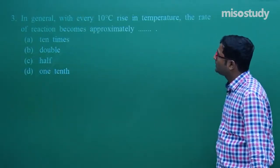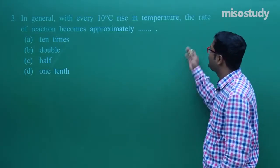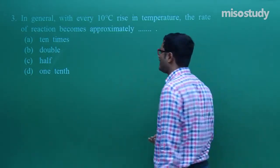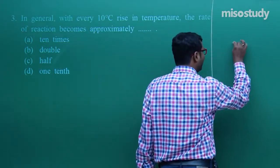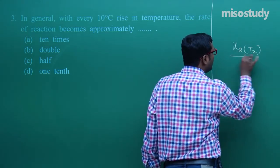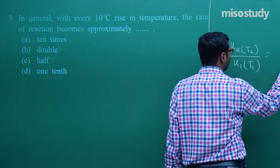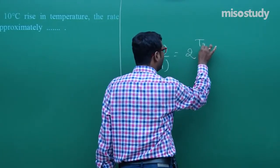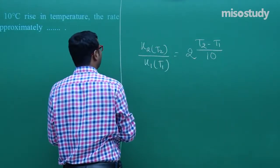Question number 3: in general, with every 10-degree rise in temperature, the rate of reaction does what? As we know, the relation is K₂/K₁ = 2^((T₂−T₁)/10). Remember this formula.